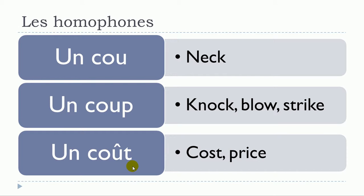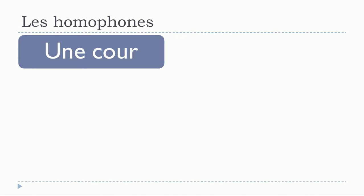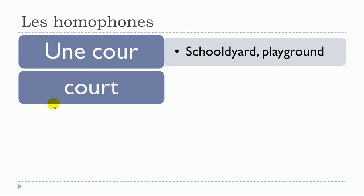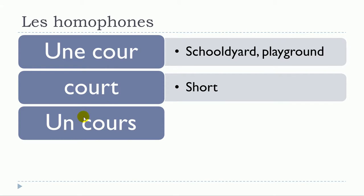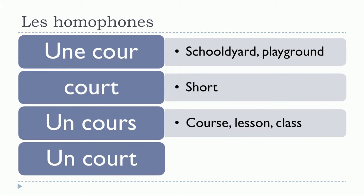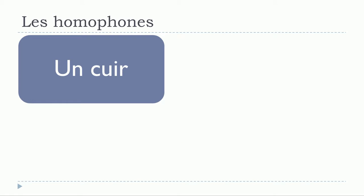Une cour, and then we get the adjective court. After that, un cours and then un court. You can see that here you get the feminine une cour, then you get the adjective court. Un cours, un court.